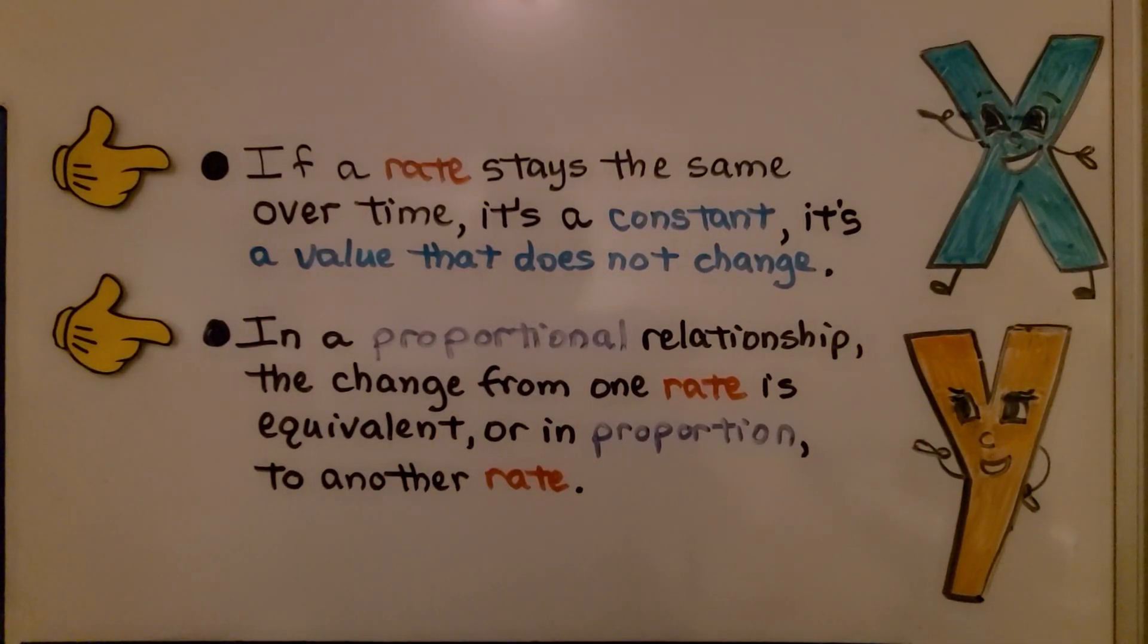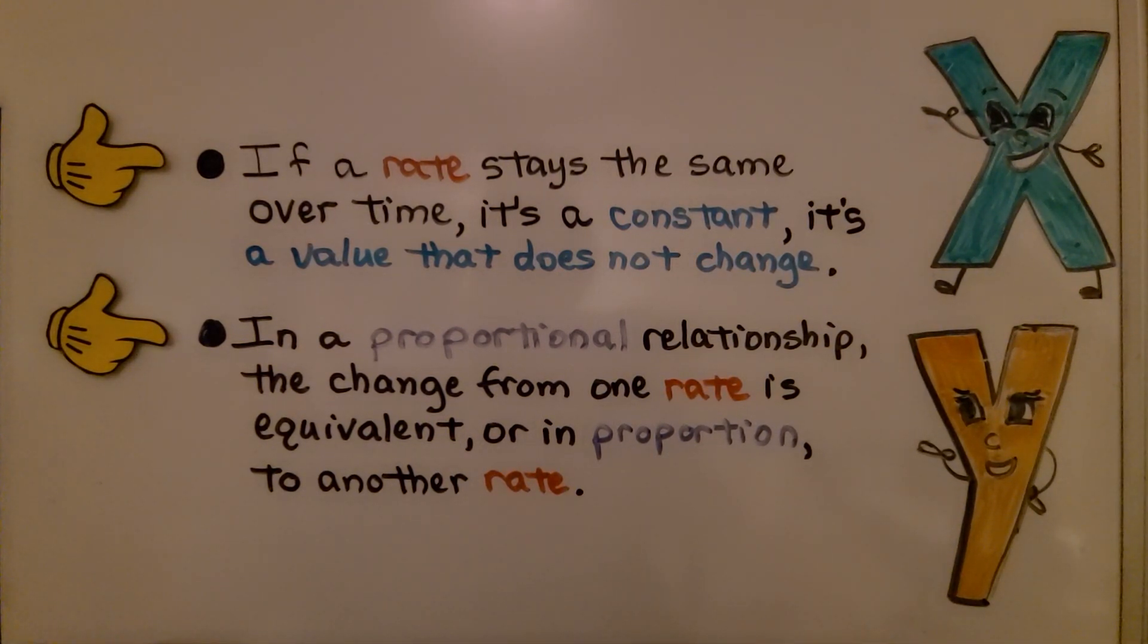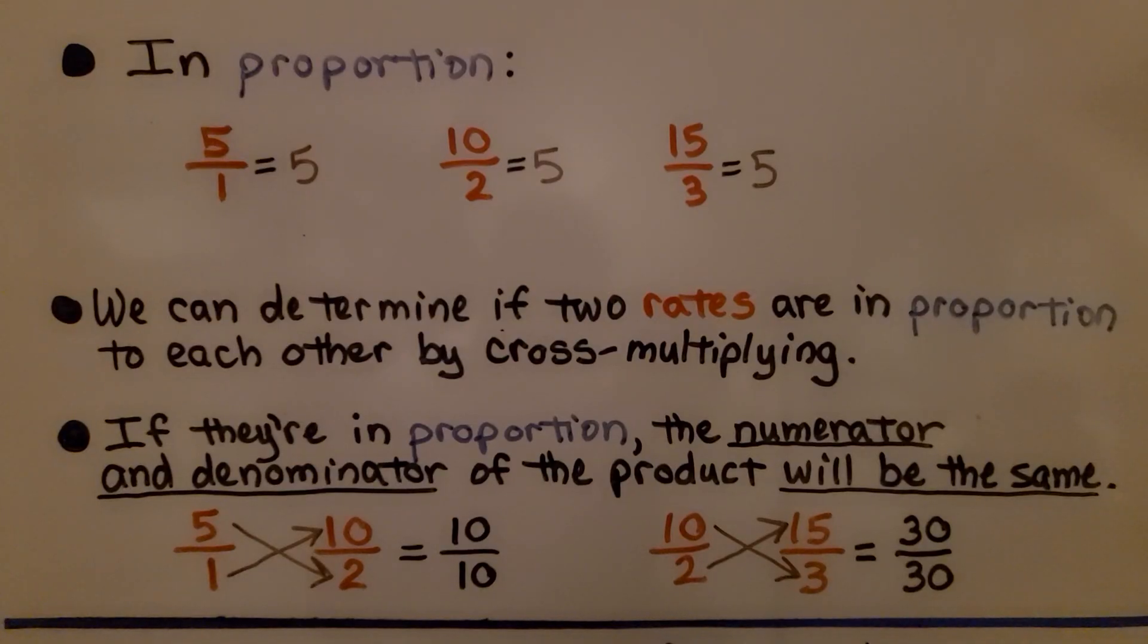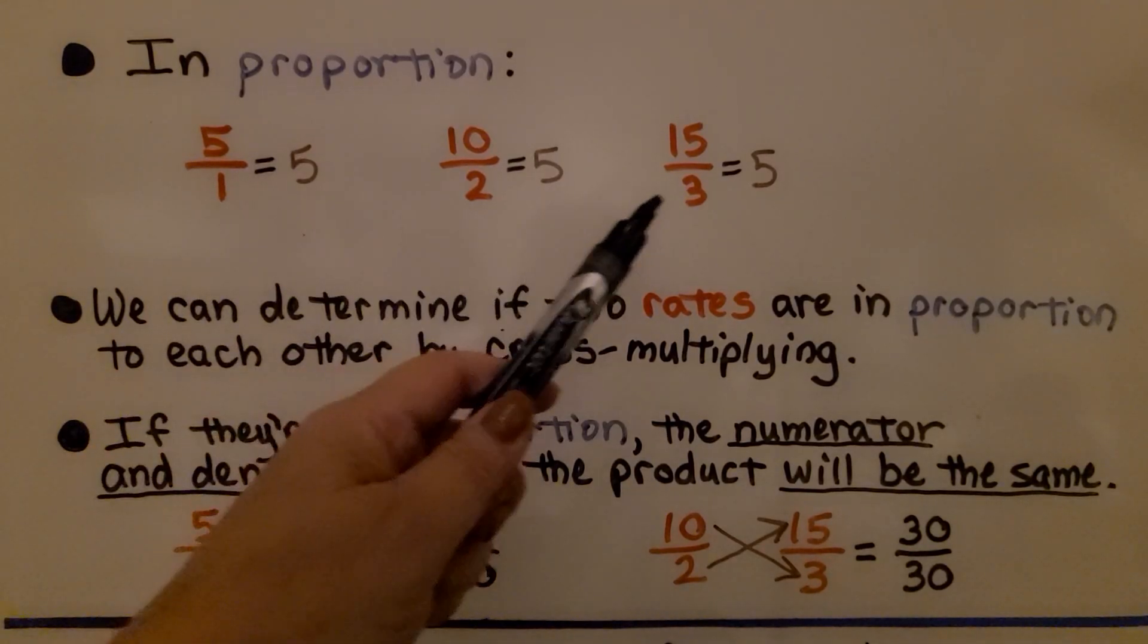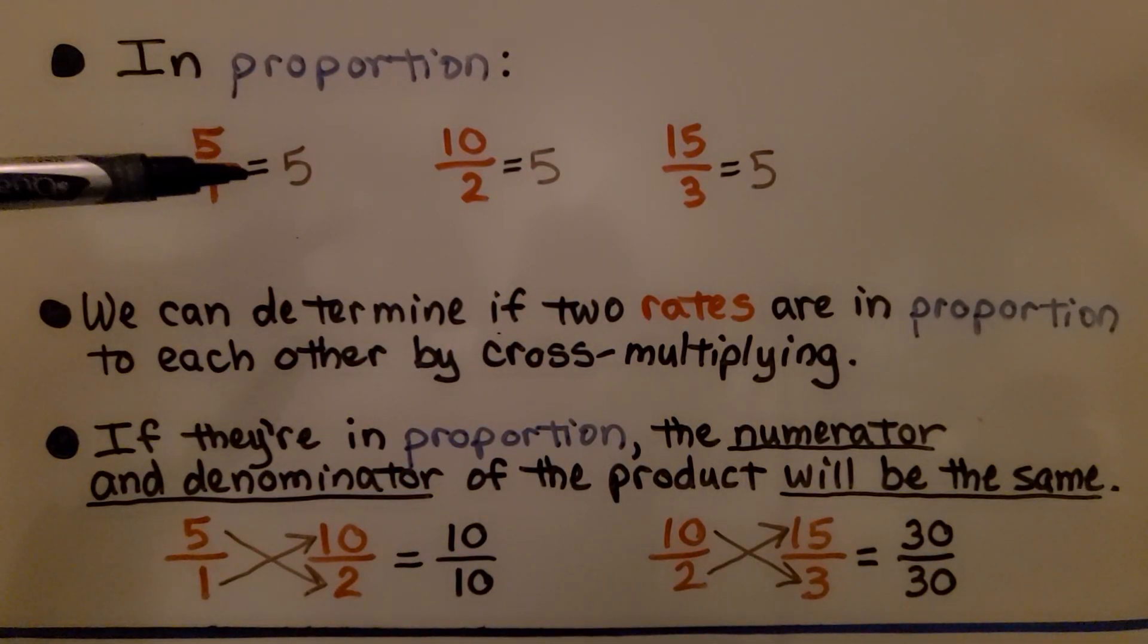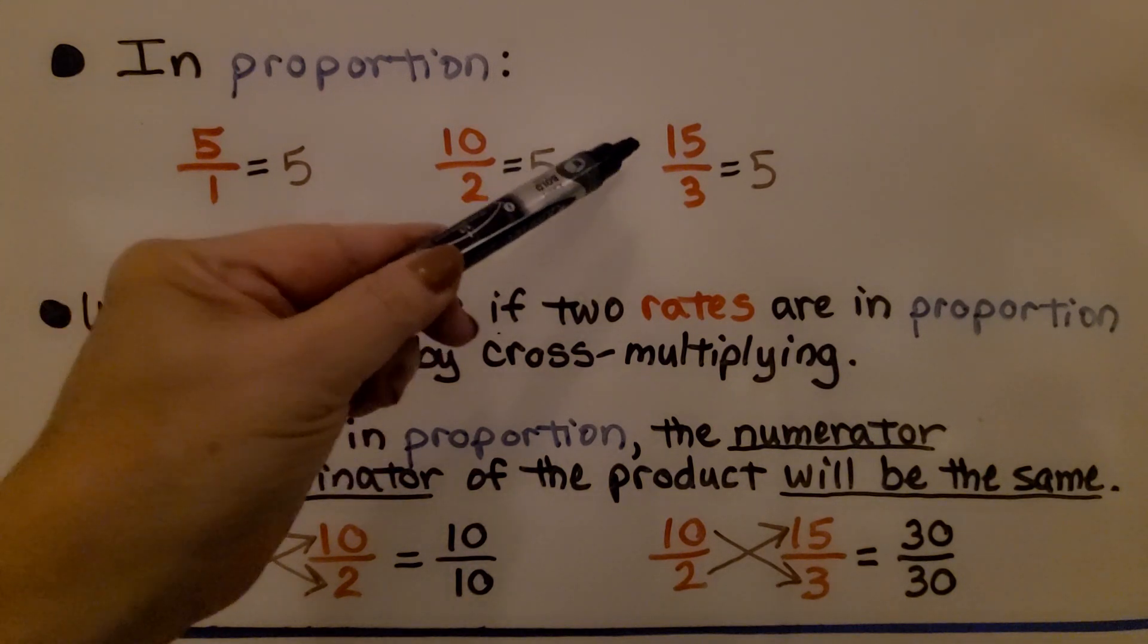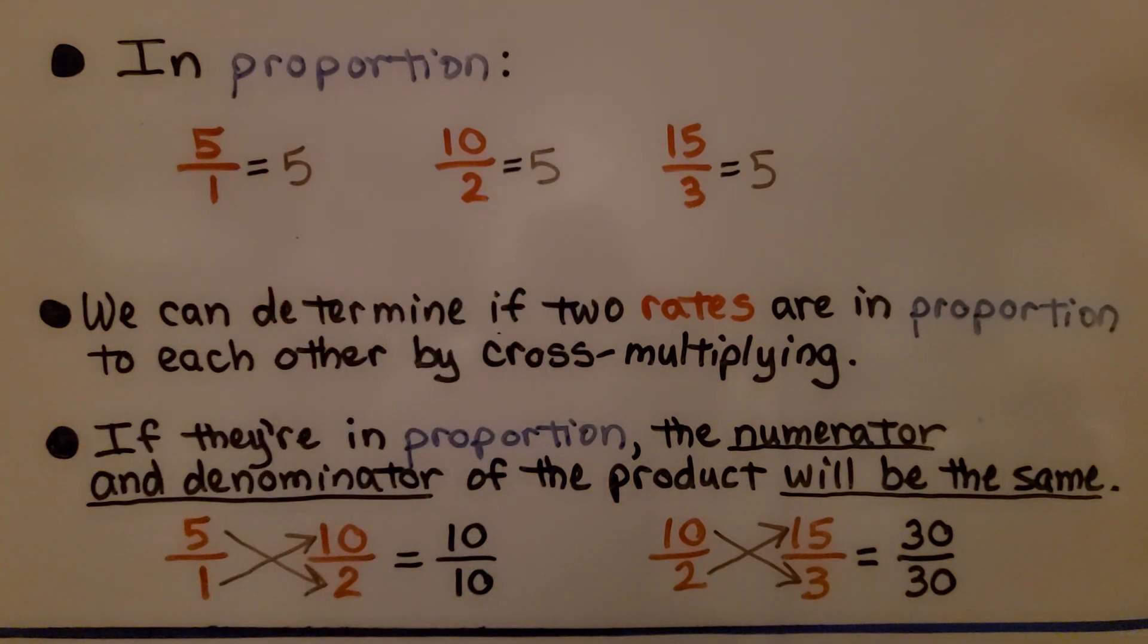If a rate stays the same over time, it's a constant. It's a value that does not change. In a proportional relationship, the change from one rate is equivalent or in proportion to another rate. These are in proportion. We have 5 over 1, which is equal to 5. We have 10 over 2, which is equal to 5. And 15 over 3, which is equal to 5.